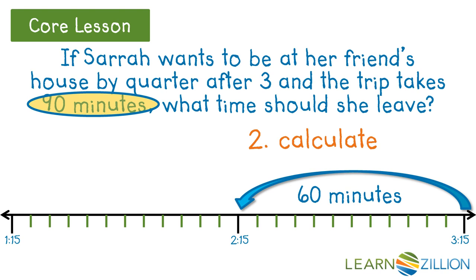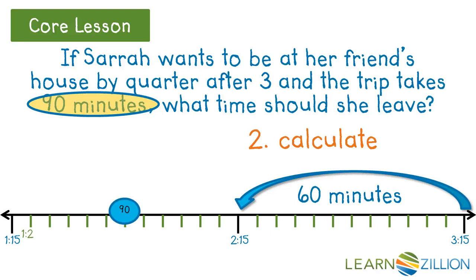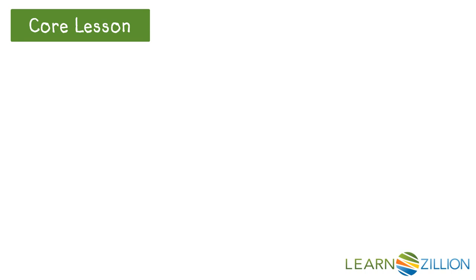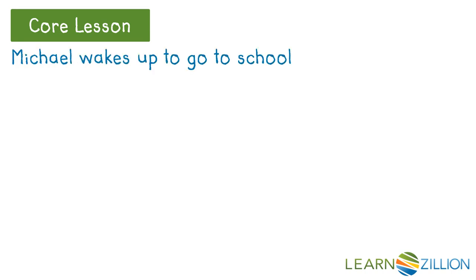Then we keep counting back until we get to 90: 60, 65, 70, 75, 80, 85, 90. Next we have to find out what time it is at that hash mark, so we count up from 1:15 in five-minute increments: 1:20, 1:25, 1:30, 1:35, 1:40, 1:45. The answer to the question is 1:45.